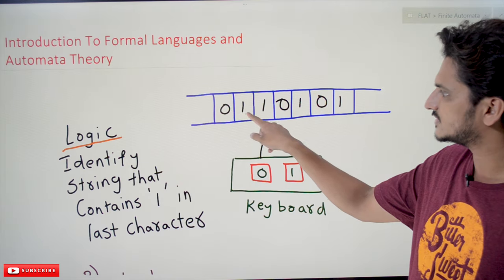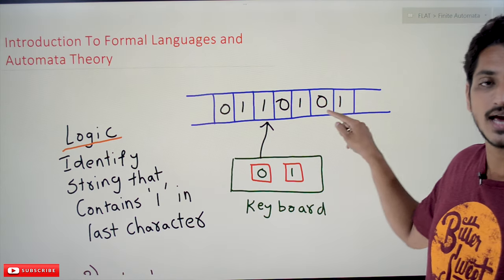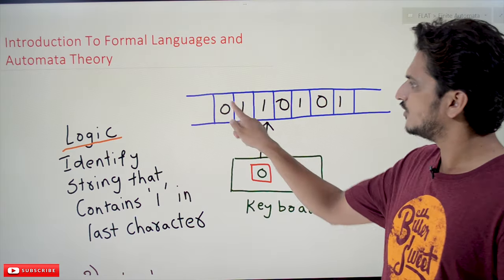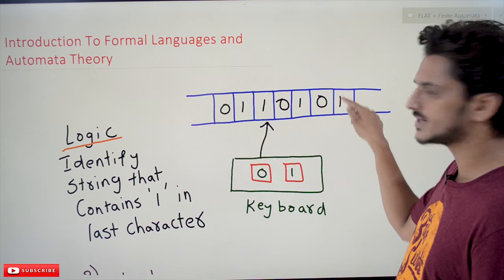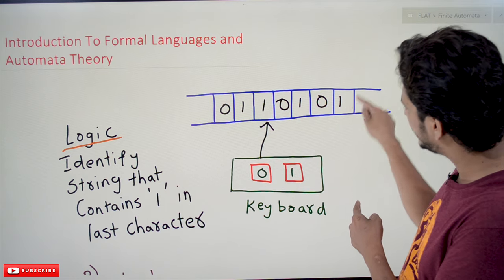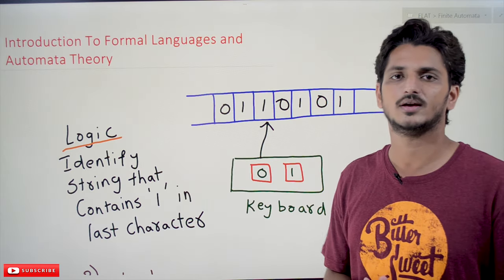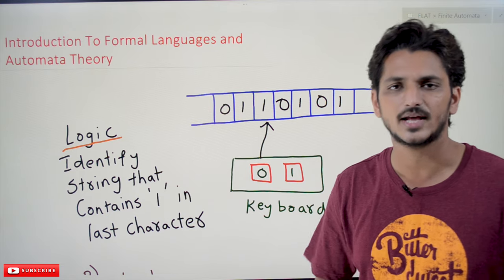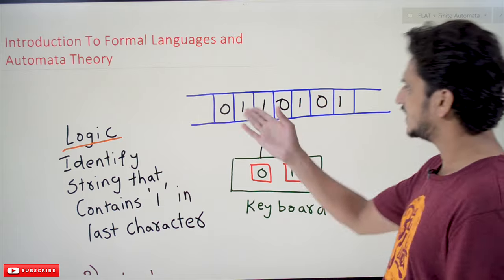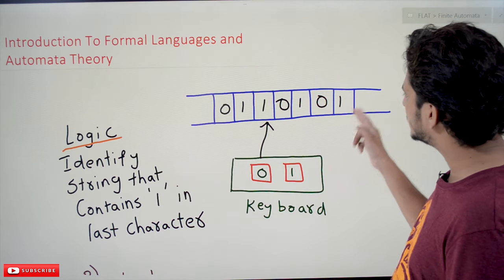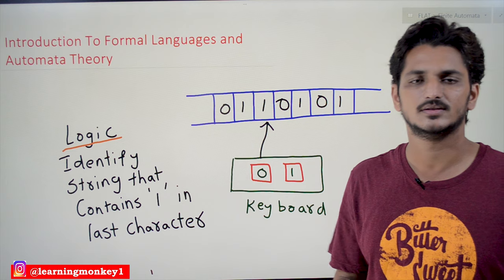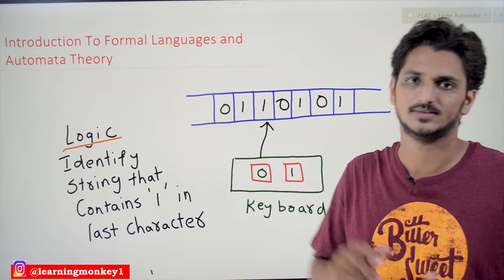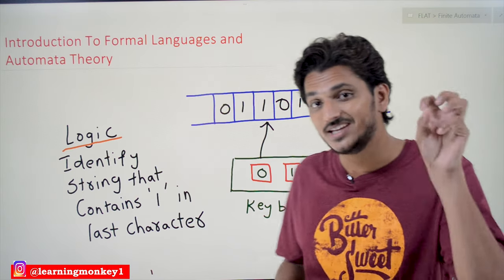This is the first character, second character, third, and so on — this is the last character. The logic is simple: we go through memory, move from one location to the next, and check whether the last location contains character '1' or not. If it is '1', the logic accepts; if not, the input is not accepted. That is how we build logic with today's computational capabilities.